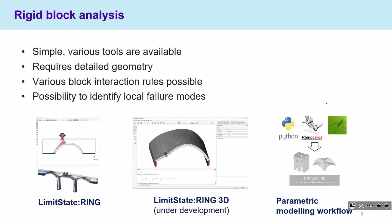For rigid block analysis, the methods are simple and there are various methods available. One of the problems of this method is that it requires very detailed geometry, and because of that the results might be a bit sensitive to some local changes of the geometry. Also, the solutions might identify some local failure modes, which can cause problems if you want to get the overall behavior of the bridge.